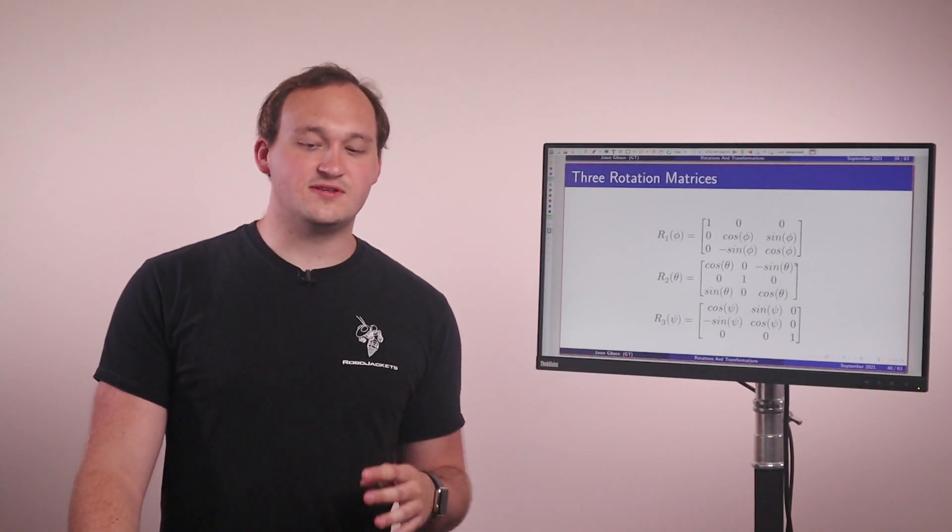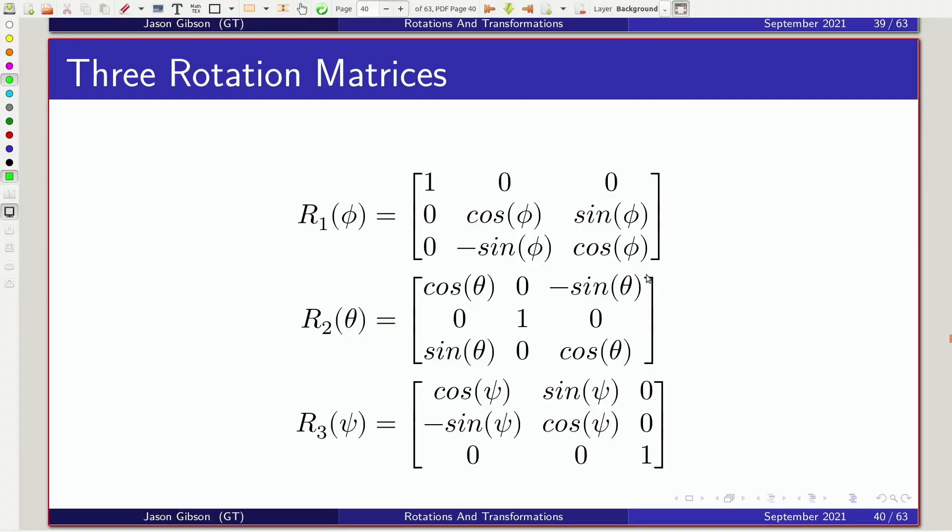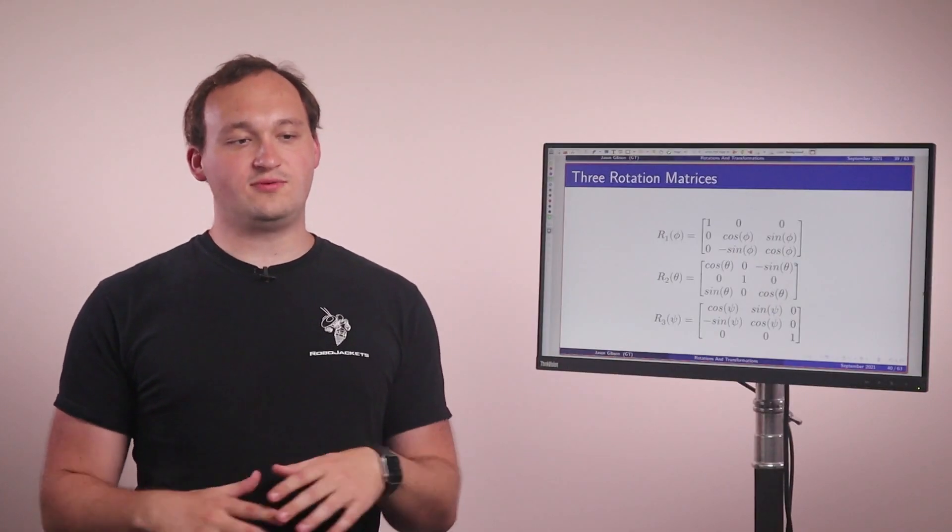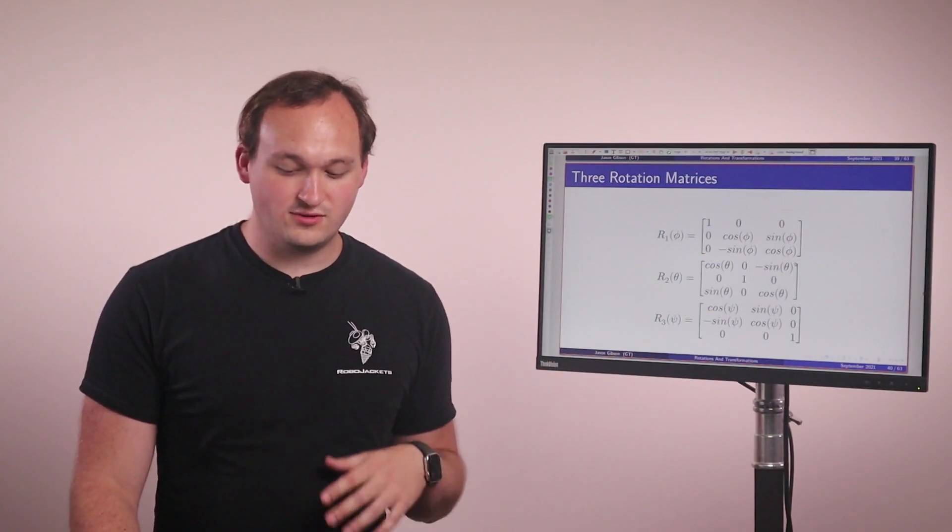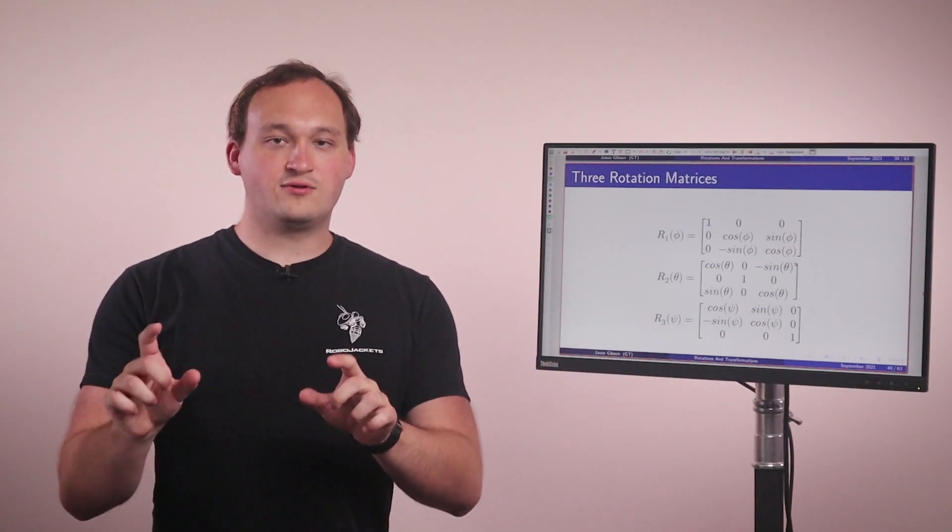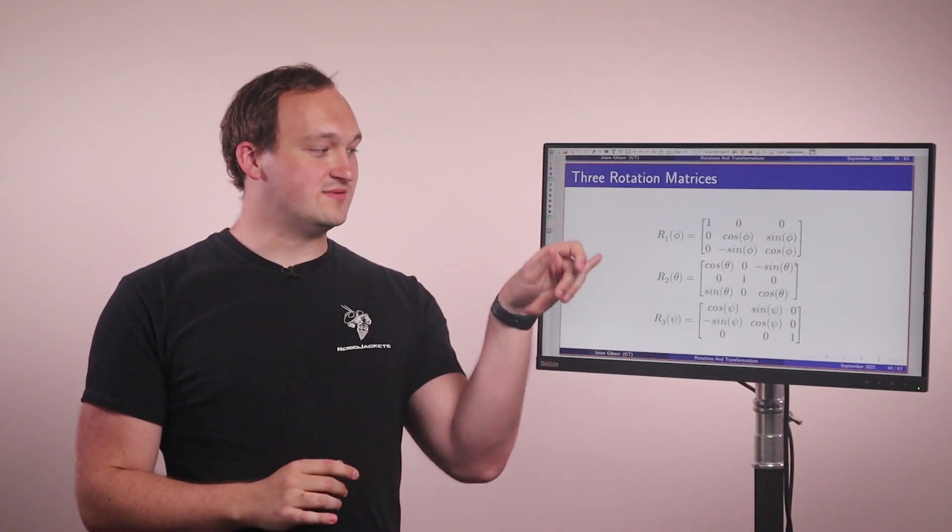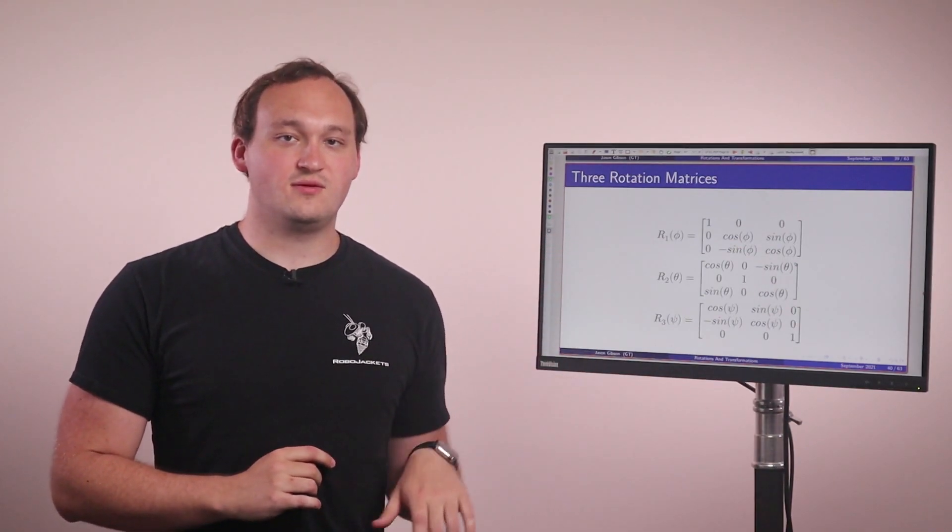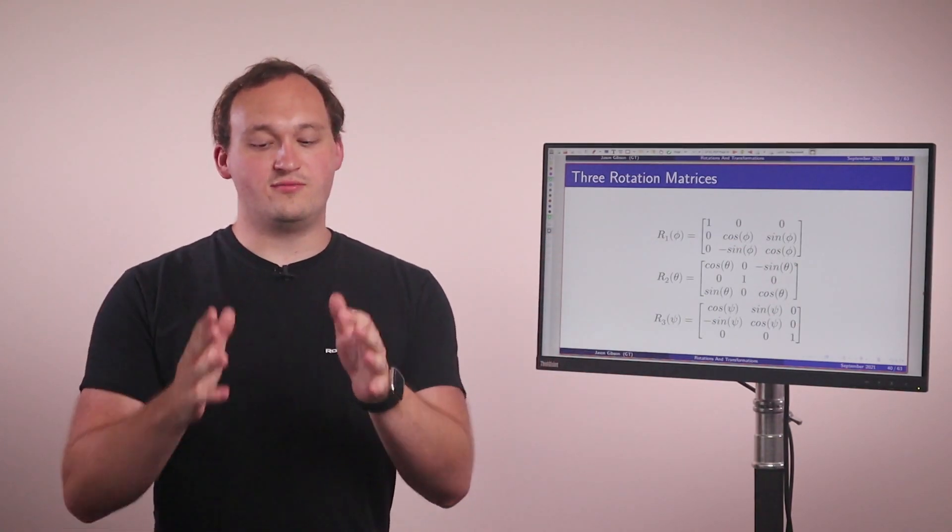So there are three different rotation matrices that are defined. The first rotation matrix is around the X axis. The second is around the Y axis. And the third is around the Z axis. So what you would typically tend to do if you were to represent an Euler angle is take your Euler angles and then apply into each one of these matrices on whatever axis you are talking about, and then multiply all the matrices together.